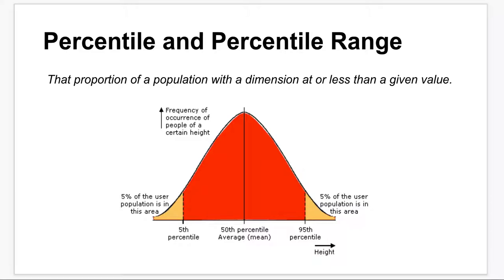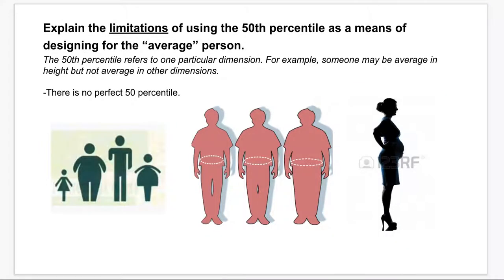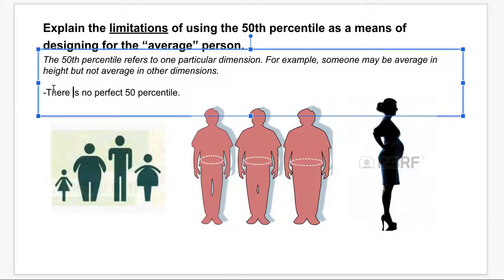So let's have a look at something else. This was a little bit about the user range. Remember that the 50th percentile isn't always an accurate measurement of an average person, because different factors could change. For example, this might be an average height, but the width of the person is different. When somebody's pregnant, the way that their measurements change is very different. So there's no exact 50th — they're just kind of estimating and giving it an average. Just remember that.